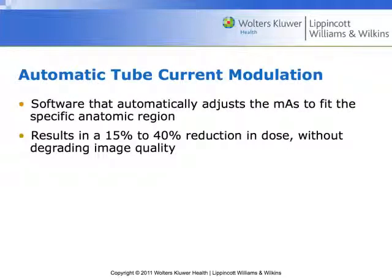Automatic tube current modulation: most CT software is going to automatically adjust the MAS to fit the specific anatomic region. It's going to read what it's picking up, feed that back into the loop, and this will result in a decrease in dose of about 15% to 40% without degrading the image quality.